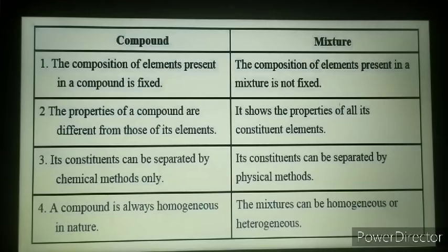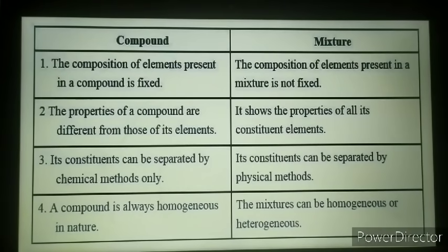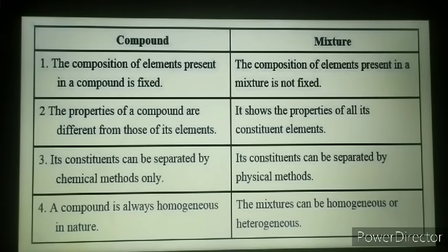But when we talk about a mixture, its constituents can be separated by physical methods, not chemical methods. We do not apply chemical methods for separating mixtures because the constituents are present in their original form — there is no chemical change when a mixture is formed. A compound is always homogeneous because its composition is always in a fixed ratio. But a mixture can be homogeneous or heterogeneous, depending on the specific mixture.